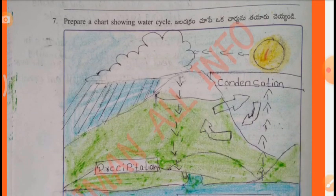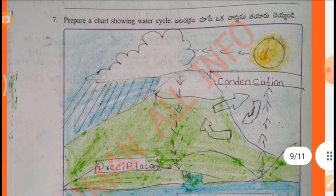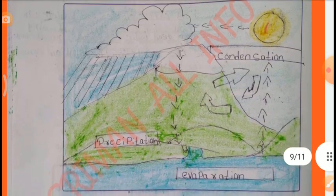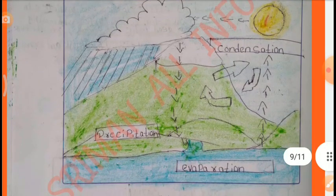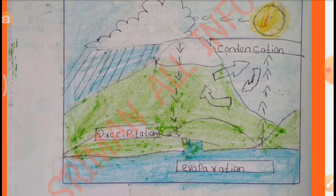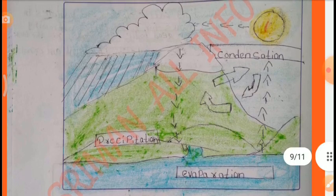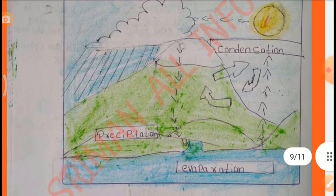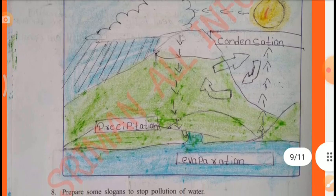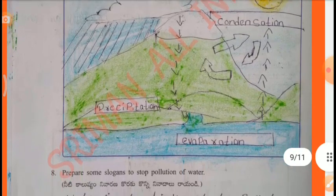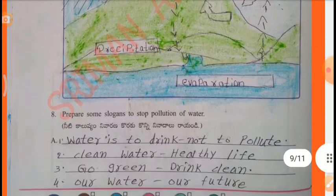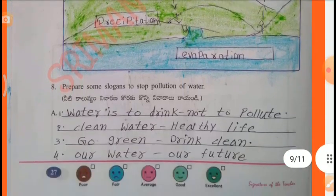Prepare a chart showing the water cycle. This is a picture of the water cycle — 1. Evaporation, 2. Precipitation, 3. Condensation. This is the water cycle.